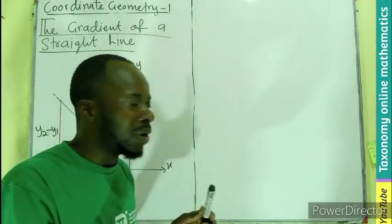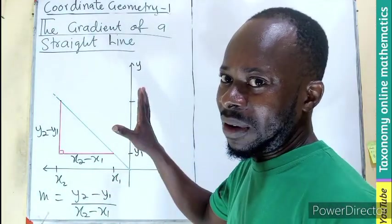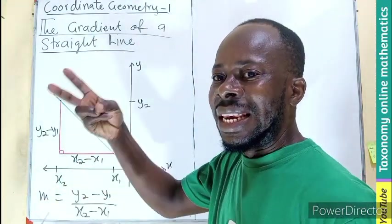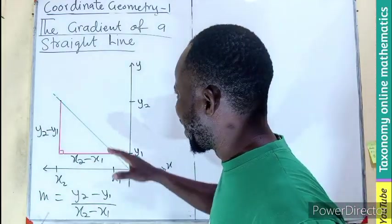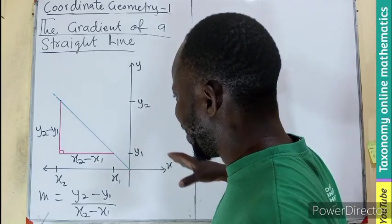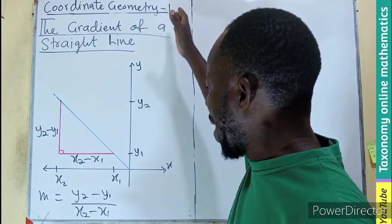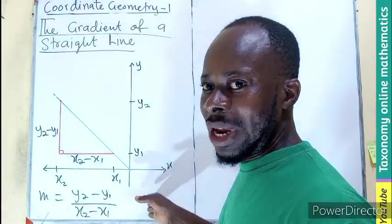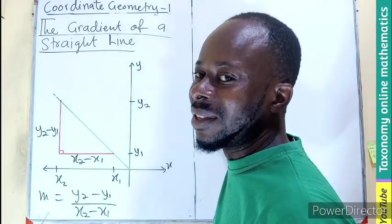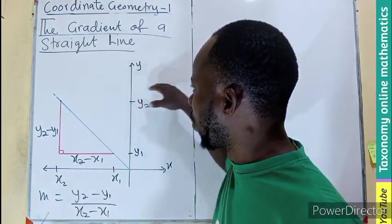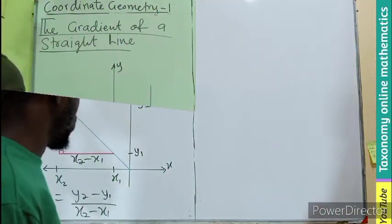So this is the second type of gradient. But we have four different types in total: the positive gradient and the negative gradient. There are also cases whereby the line may not move in either diagonal direction — it may be perpendicular to the x-axis or horizontal to the x-axis, which is also perpendicular to the y-axis. Let's see how we can describe those gradients as well.